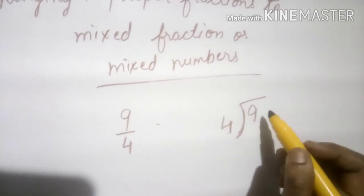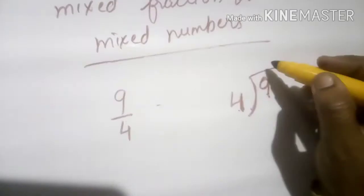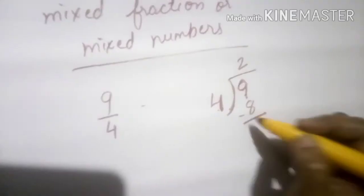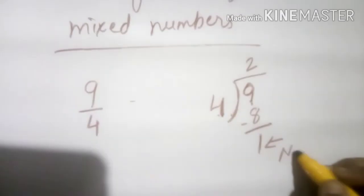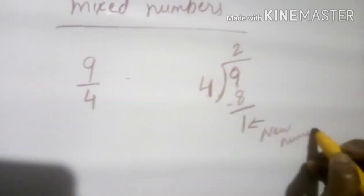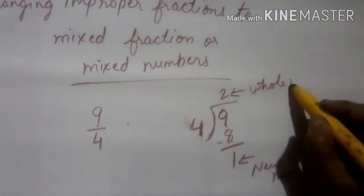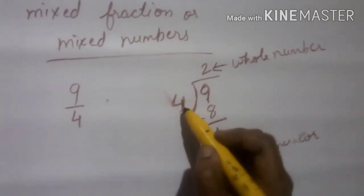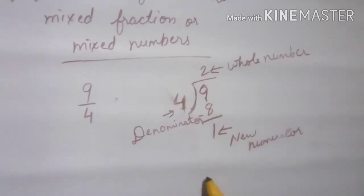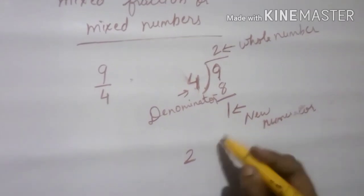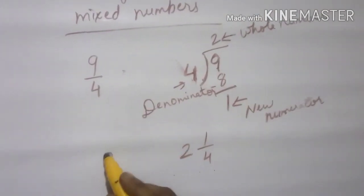This is the denominator and this is the numerator. Now divide: 4 times 2 is 8. When you subtract, you get remainder 1. This remainder 1 will become the new numerator. 2 is the whole number. 4 will remain the same denominator. So the mixed fraction is 2 and 1 by 4. That is the mixed fraction of the improper fraction 9 by 4.